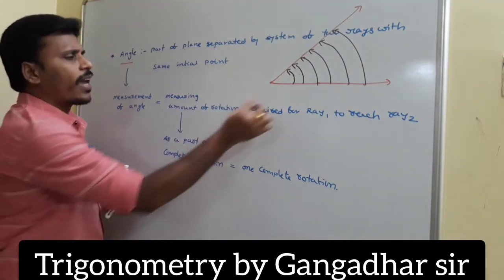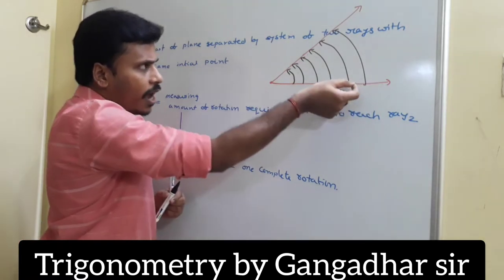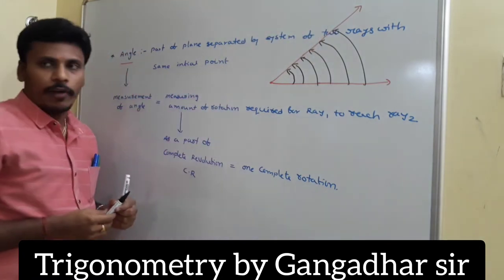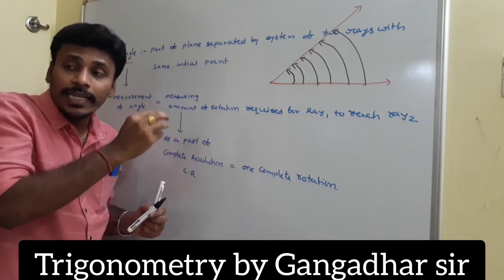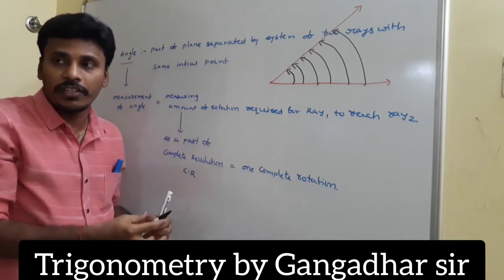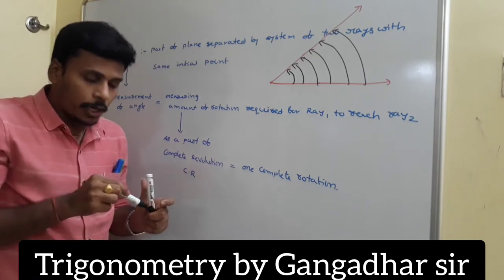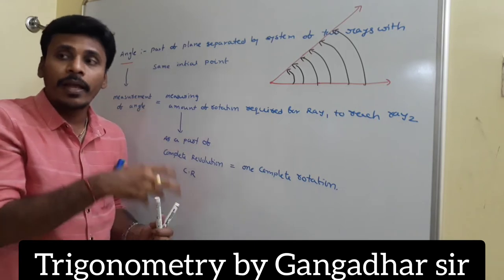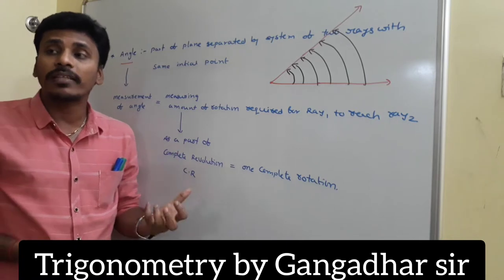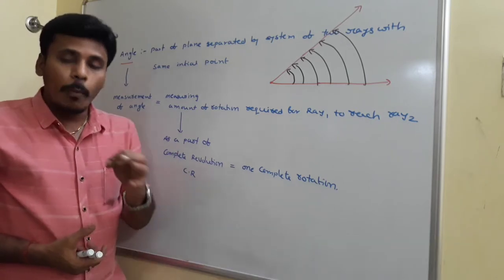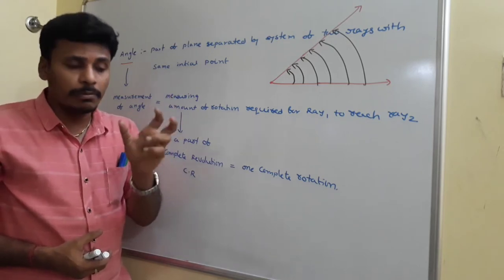We need to move the initial ray to reach the position of the final ray. By pushing along the plane, it touches each and every point in the region. So the measurement of the angle is the measurement of those points, which is the measurement of the amount of rotation. To measure anything, we need a universally acceptable parameter — for example, to measure weight you need to know about kilograms; without knowing 1 kilogram, you cannot measure 5 kg or 10 kg.